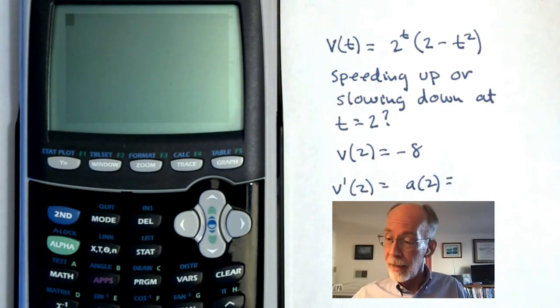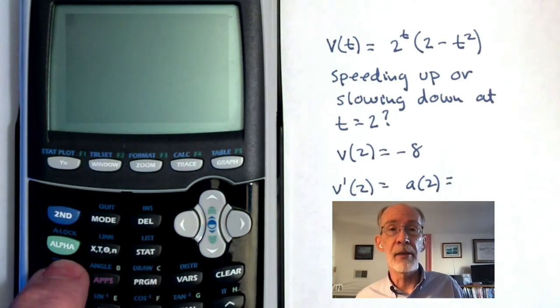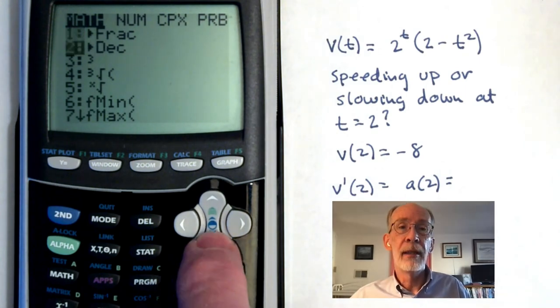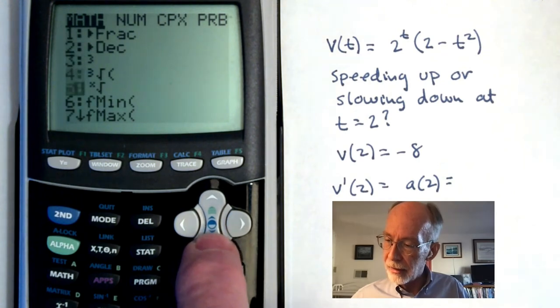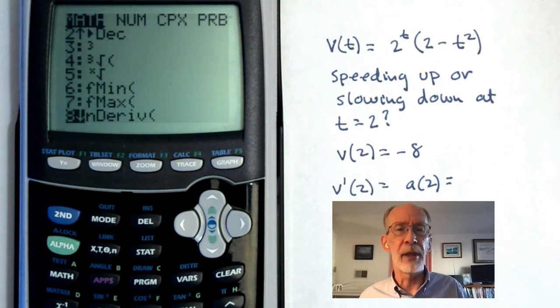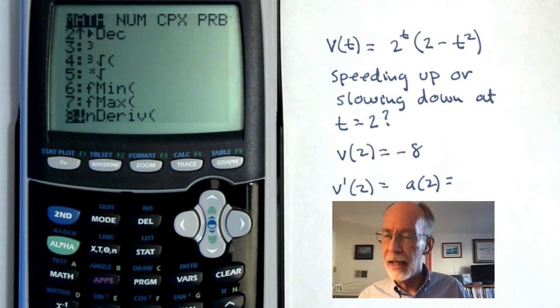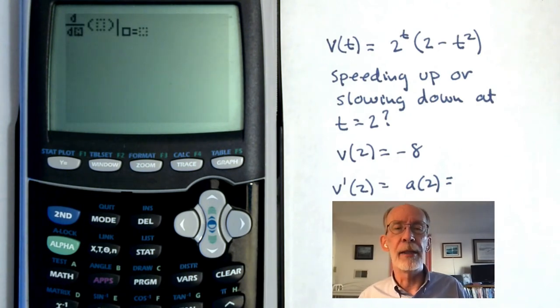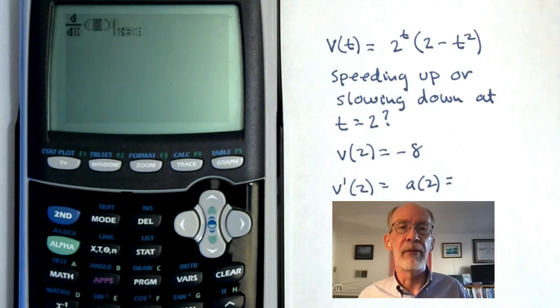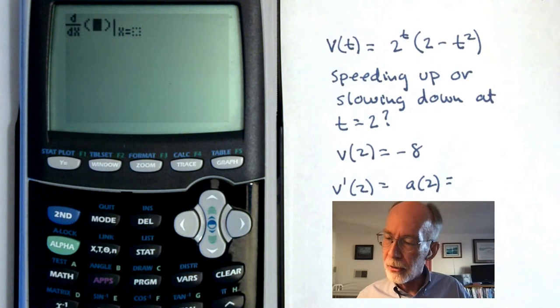So we go to the calculator and we hit the math button about a third of the way down on the left hand column. And we go to command number 8 on this calculator. It's near the bottom of that first menu. Different OS's might have it in a slightly different place, but it's in this menu. It's near the bottom. This time it happens to be number 8. And we hit that command and we get a little template that uses a similar sort of notation to what we use when we write these things out. So I'm going to use x as the independent variable just because there's somewhat fewer keystrokes involved in using it.